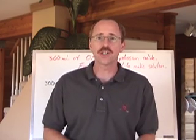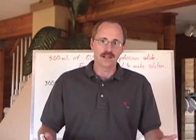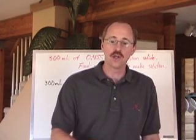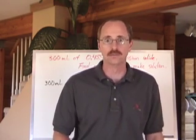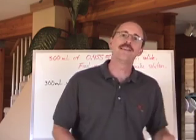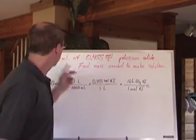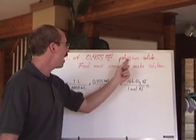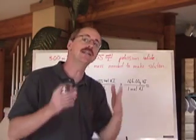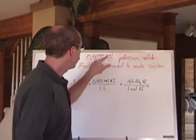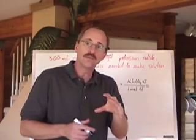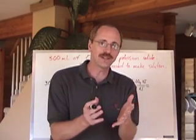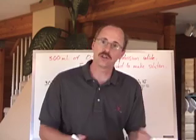You're also going to be asked to prepare a solution. The teacher will give you the concentration they want and the volume, and you'll need to find the mass of the chemical to weigh out. For this question: 300 milliliters of 0.455 moles per liter potassium iodide — what's the mass of potassium iodide needed to make the solution? You've got volume and moles per liter. Use that volume to cancel out liters, leaving yourself with moles of KI. Once you have moles of potassium iodide, you can find the mass.